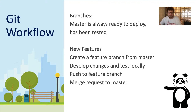We can create new features from the master branch by creating a feature branch, developing our changes locally, and then pushing these up to our branch through what are called commits — which is what Git calls a change. Once we're ready with our feature branch, we can create what's called a merge request to master, which is a request to take the changes from our feature branch and put them into our destination branch.